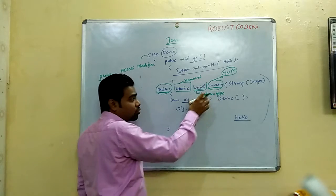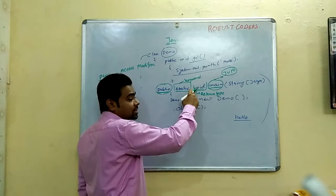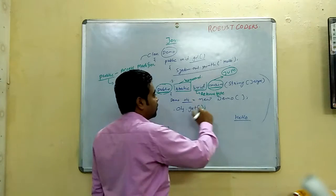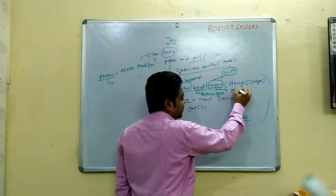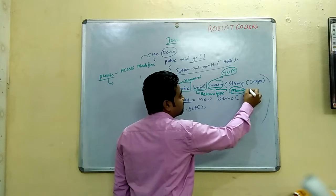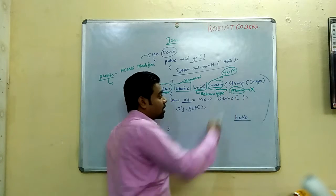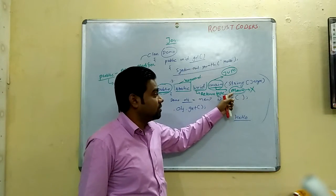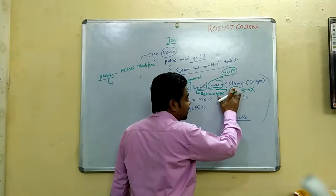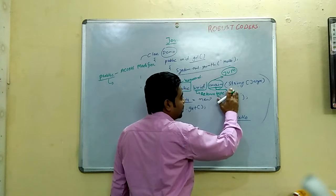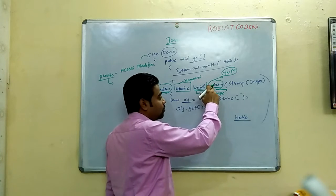Void means that this method will return nothing. This method returns nothing, that is why it is void. Main is a predefined name. If you write it as capital Main, JVM will not support it. There is no compile-time error, but at runtime JVM will throw an error - main method not found.